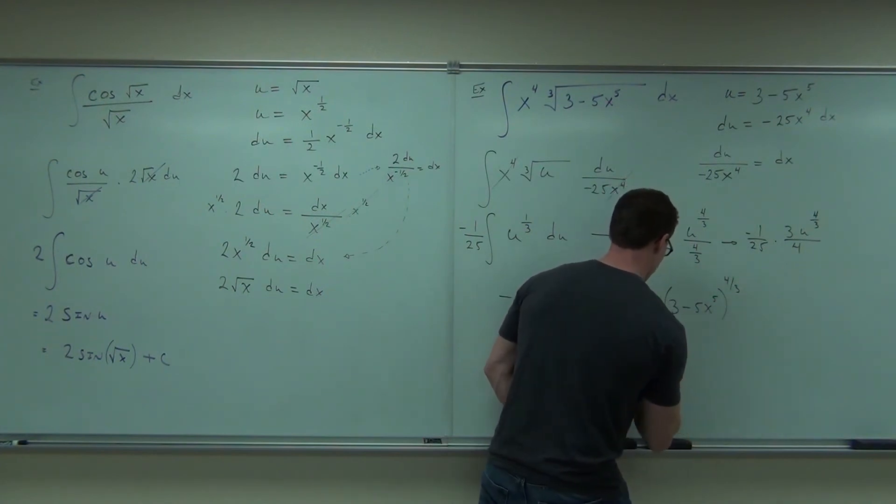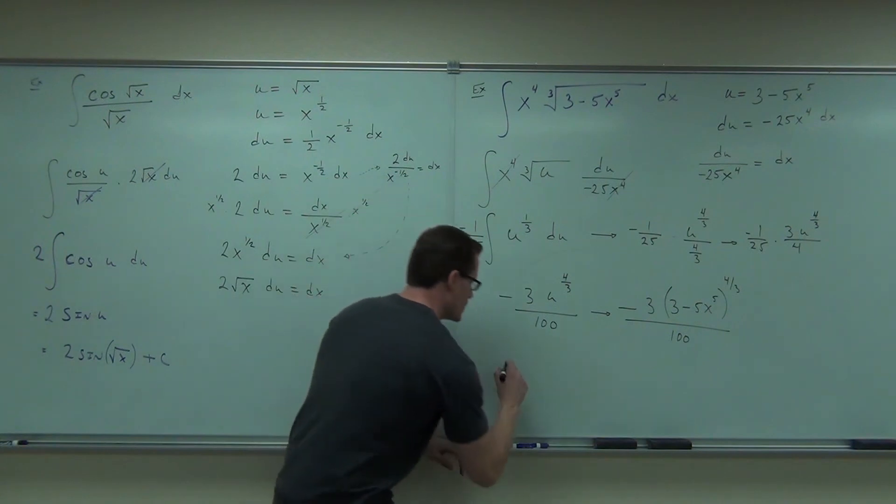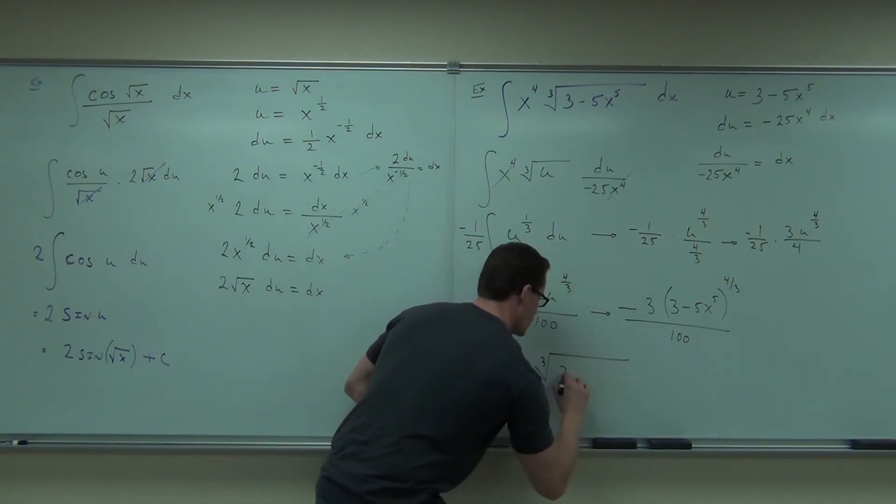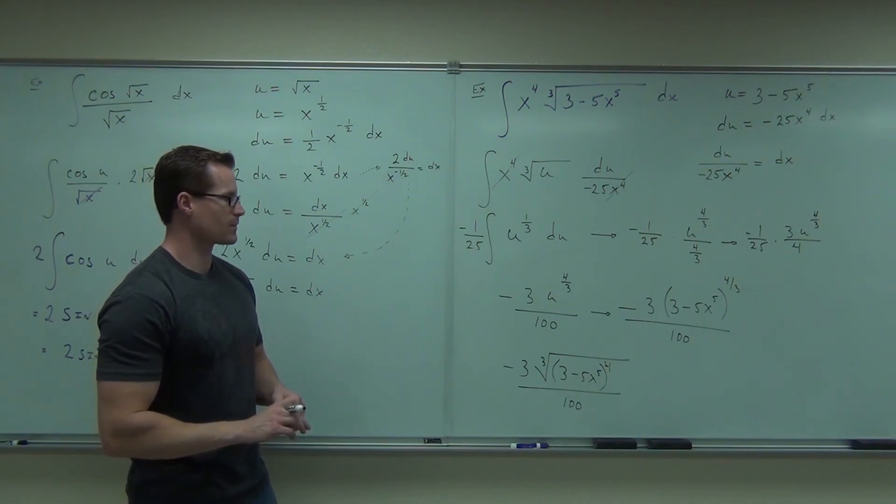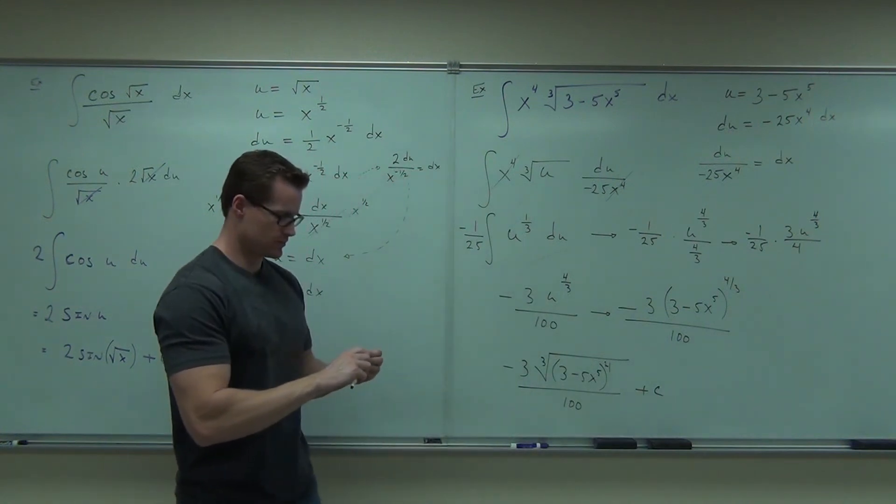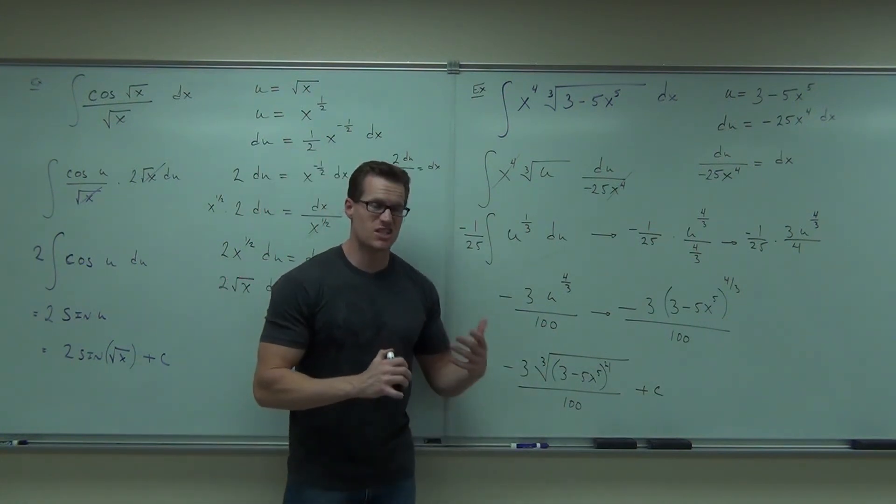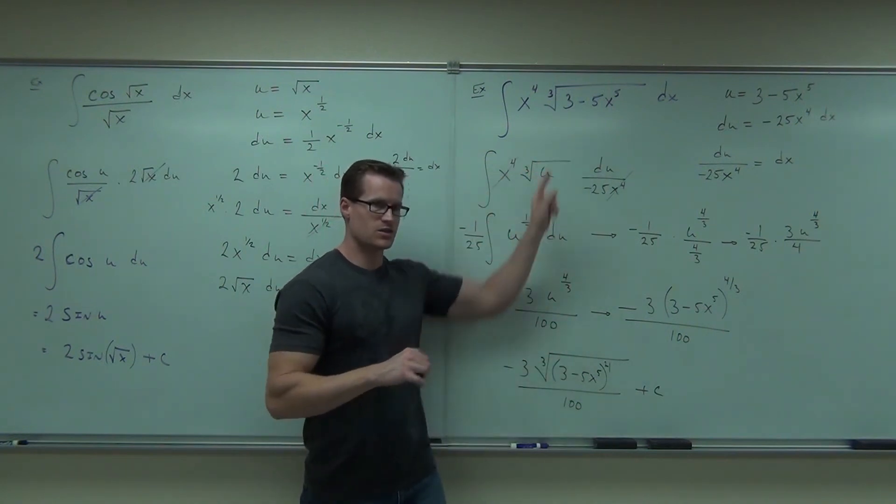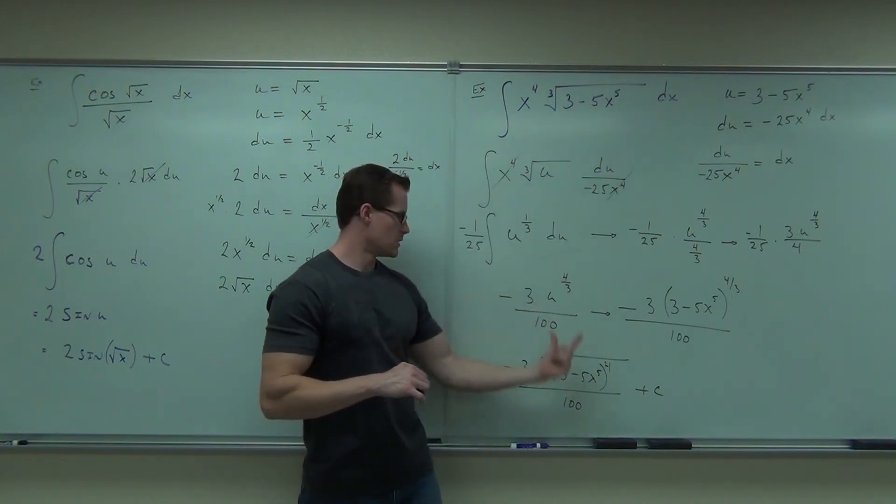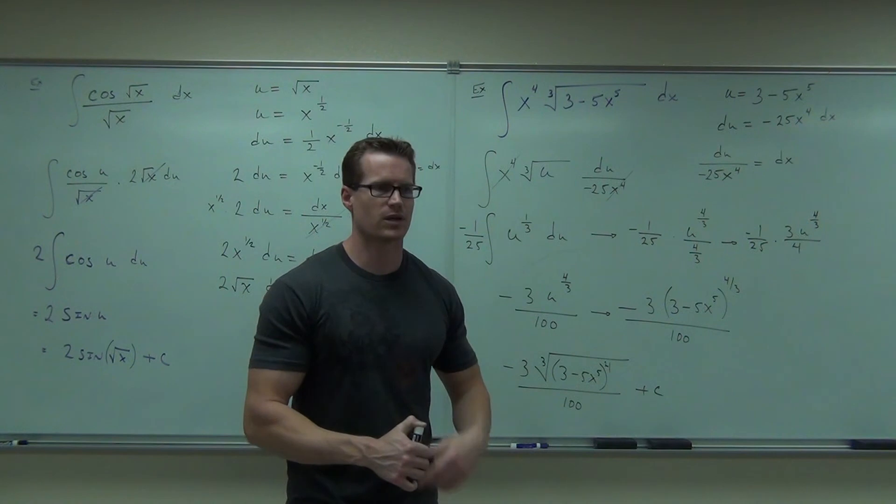What you can do is go one more step on this thing and put it back into radical notation if you would like. That will be negative three, the cube root of three minus five x to the fifth all to the fourth power, all over 100, plus c. What we care about is do you see that this is the derivative of that? You see some things coming out of that: four-thirds goes down to one-third, derivative the inside is something x to the fourth, there's a something x to the fourth, that 25 is going to simplify down to that. So that is going to work. It's a nice way to kind of check your work, is with the derivative.